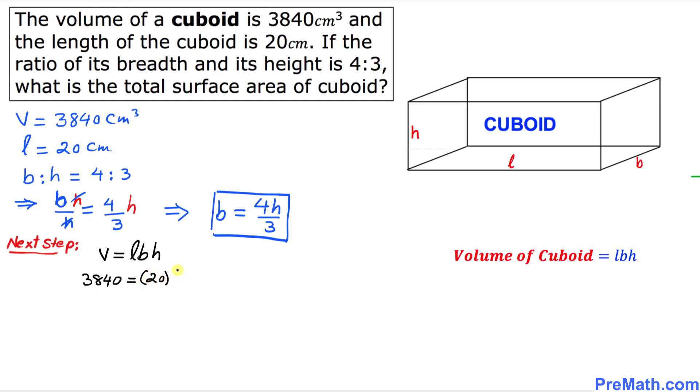And we know b is 4h over 3 times h. Let's simplify. I can write 3840 equals, if we multiply, we can get 80 over 3 times h squared. h times h is h squared.